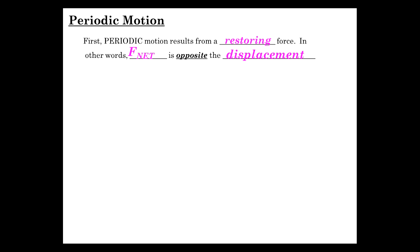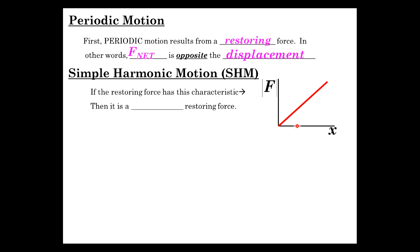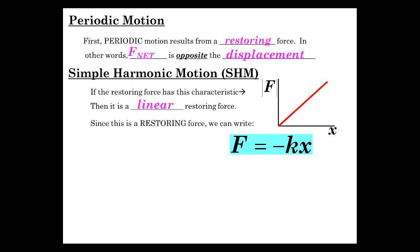So a spring-mass system sitting there — displace it, and the net force is the restoring force. If the restoring force has the characteristic where the force is proportional to the displacement, then it's a linear restoring force. And since it's a restoring force, it restores back to the equilibrium position, so F is equal to minus kx.